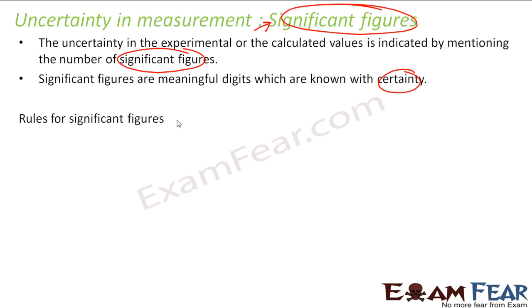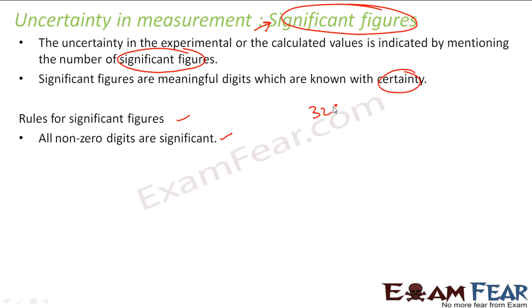Rule 1: All the non-zero digits are significant figures. For example, the number 3258.2 — all these non-zero digits are significant. In this case, there are 5 significant figures. All the non-zero digits are significant.